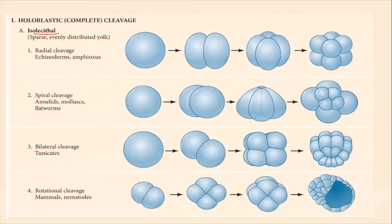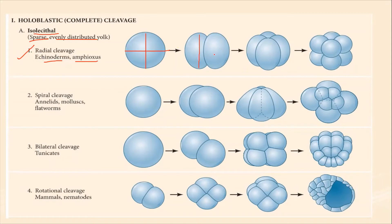The first type involves isolecithal eggs, which have very little but evenly distributed yolk. The first holoblastic type is radial cleavage, found in echinoderms and amphioxus. Here, cells cleave along the radius. The first division is along the longitudinal side, the second is also longitudinal, and the third is along the transverse.